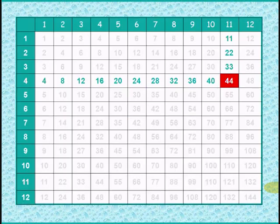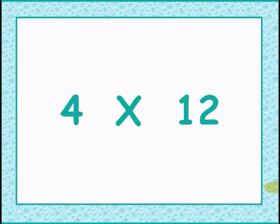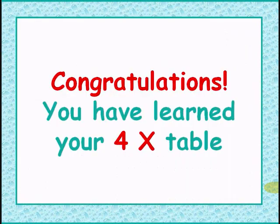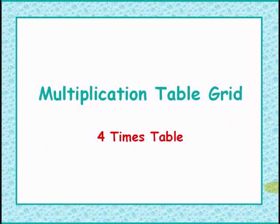Adding 4 times 10 gives 40. Adding 4 times 11 gives 44. Adding 4 times 12 gives 48. Congratulations, you have learnt your 4 times table. Let's try it one more time.